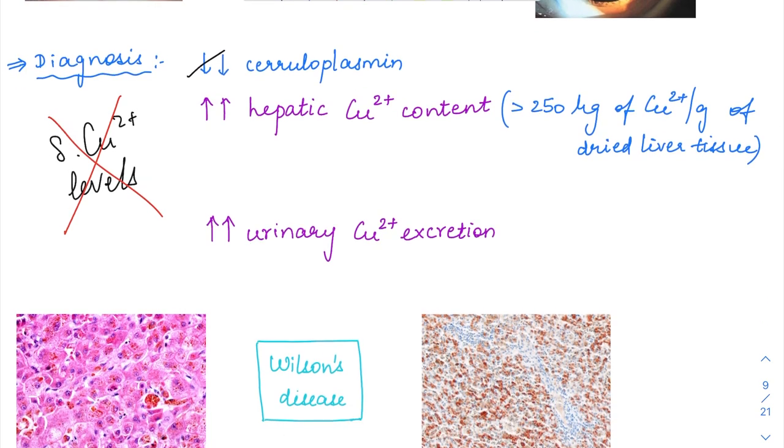You can take a hepatic biopsy and measure the copper content. Increased copper content—more than 250 micrograms of copper per gram of dried liver tissue—is the criteria. This is the most accurate test and the most sensitive test as well.